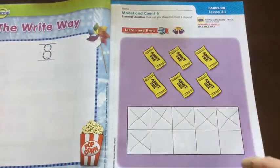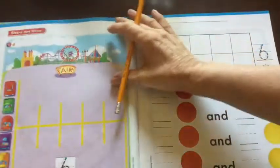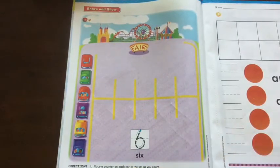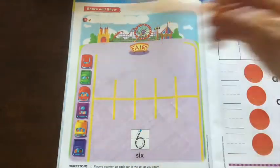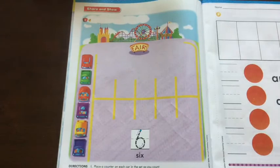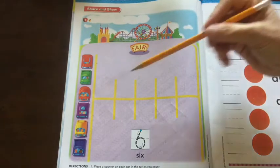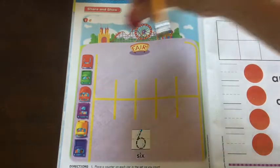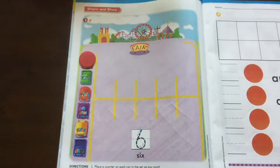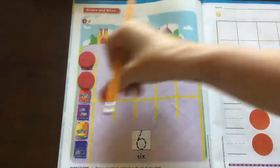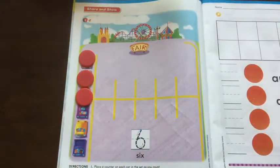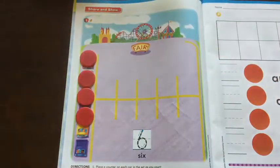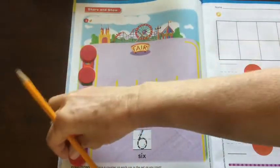Place the counters on each car in the set as you count them. Move the counters to the parking lot and draw the counters. Say the number as you trace it. Okay. So step 1, we put our counters on the cars. 1, 2, 3, 4, 5, 6.